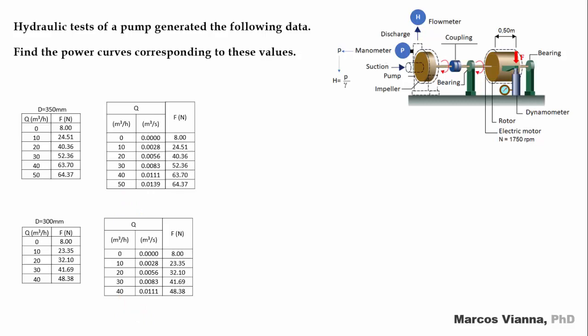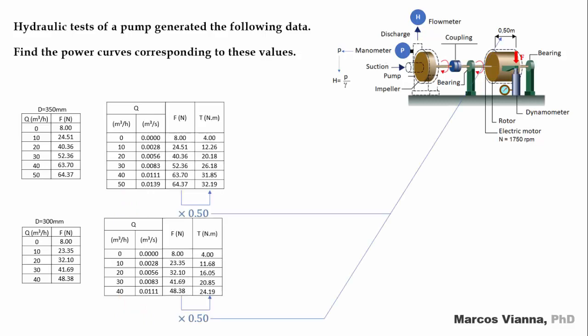The forces measured by the dynamometer are expressed in newtons. Then, we find the values of torque for each flow. For this, we multiply the forces by the distance between the dynamometer and the axis of the rotor, which is 0.50 meters.